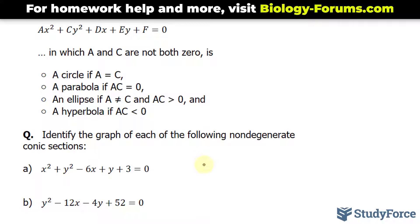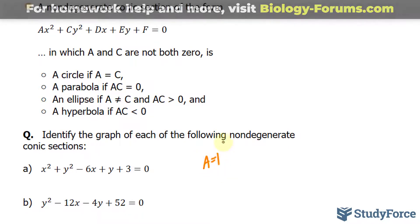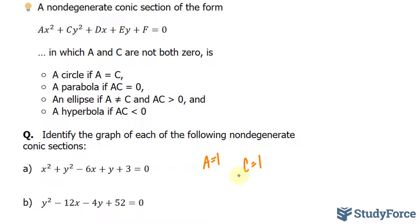Here we have an A value of 1 and a C value of 1. Remember, C represents the leading coefficient of y². We have D = -6, E = 1, and our constant F = 3.